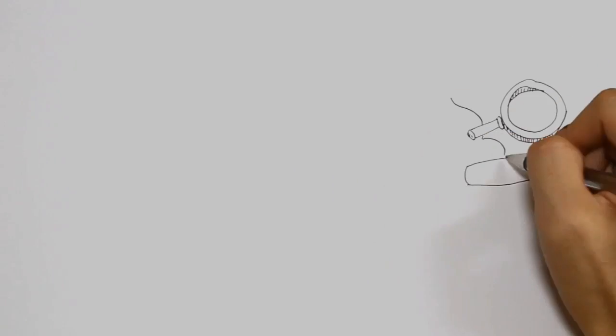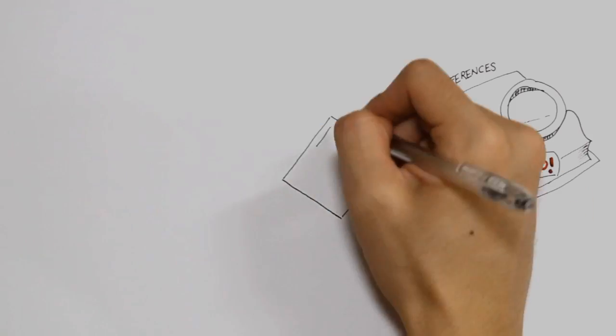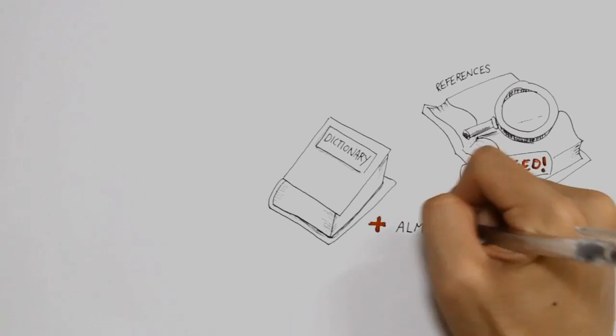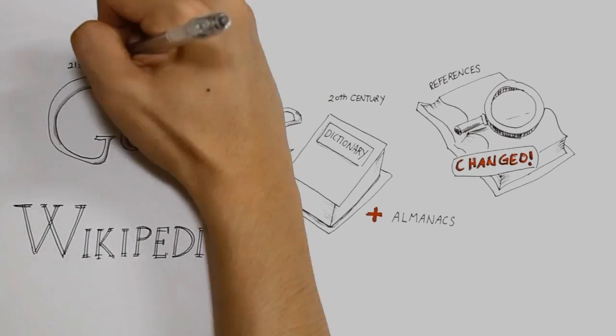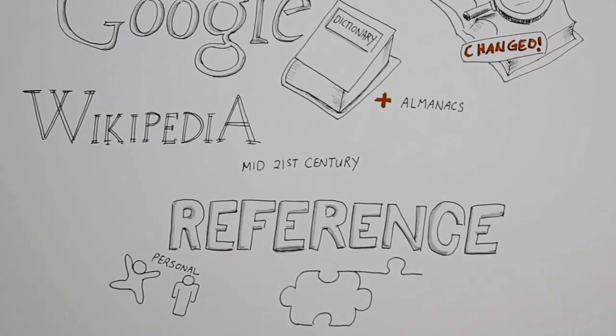Firstly, it's the whole concept of references that has changed tremendously over the past half a century. 20th century, we saw dictionary and almanacs. 21st century, we see Google Wikipedia. Mid-21st century, we will see a personal, context-relevant reference system. What do I mean by that?